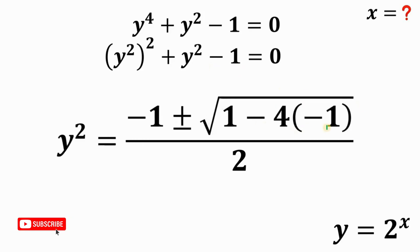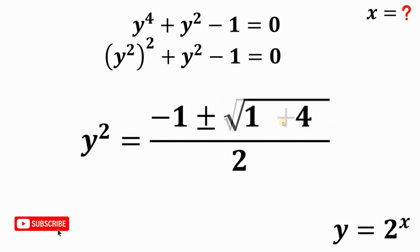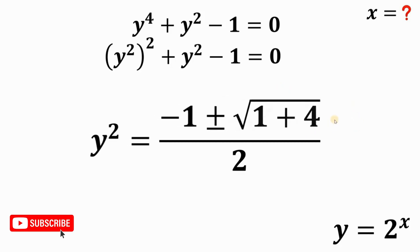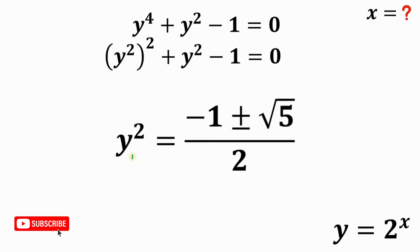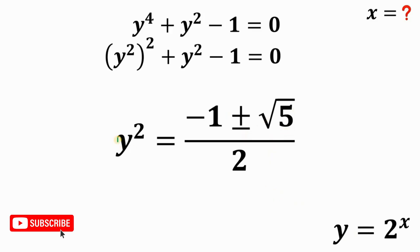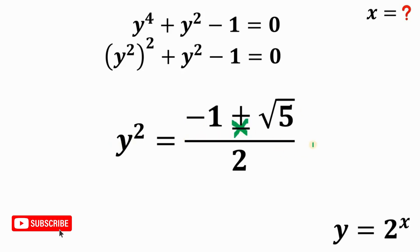Simplifying: negative 4 times negative 1 is positive 4, and 1 plus 4 equals 5. So y squared equals negative 1 plus or minus square root of 5, all over 2. But since y is greater than 0, y squared is also greater than 0, so we cannot take negative 1 minus square root of 5 over 2 because that is a negative number. Therefore, y squared equals negative 1 plus square root of 5, all over 2.